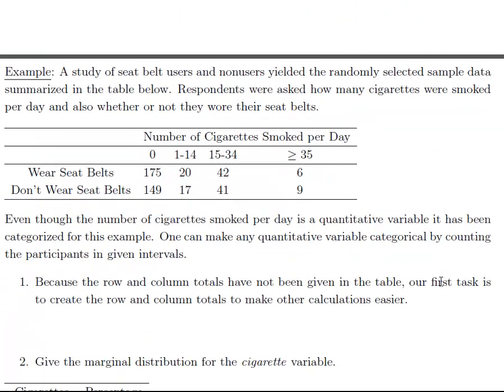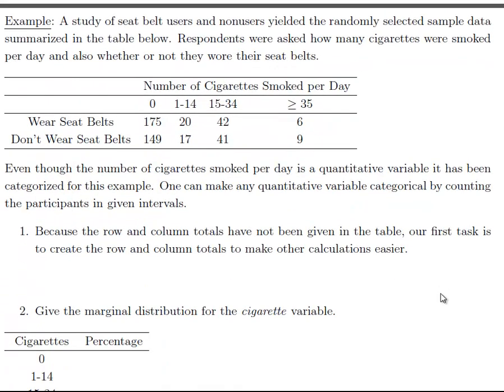Now we'll do a quick example. If you're given a two-way table like this one — a two-way table of whether or not people wear seatbelts and the number of cigarettes — the number of cigarettes is a quantitative variable, but you can make it categorical by putting individuals into categories like we did here. The first thing we want to do is compute the row totals and the column totals, as that will make all our calculations easier.